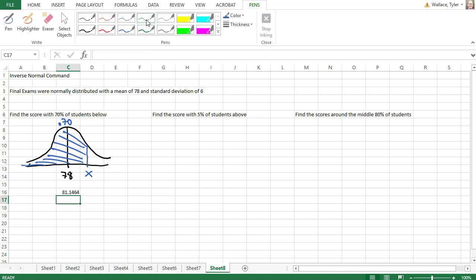Hitting Enter tells us that x, a score of 81.14, will have 70% of students below a score of 81.